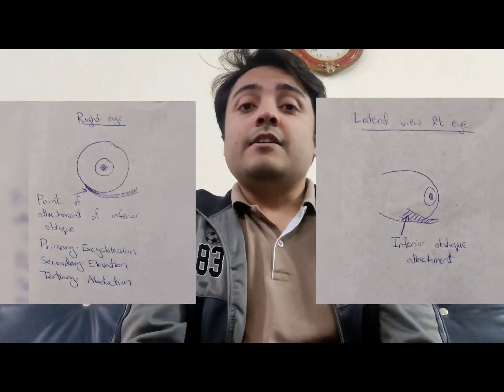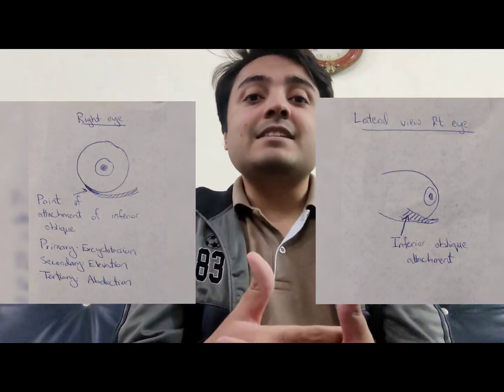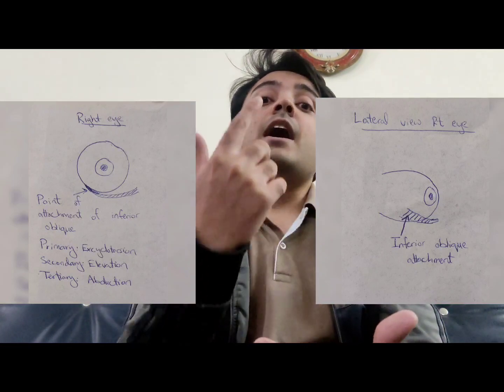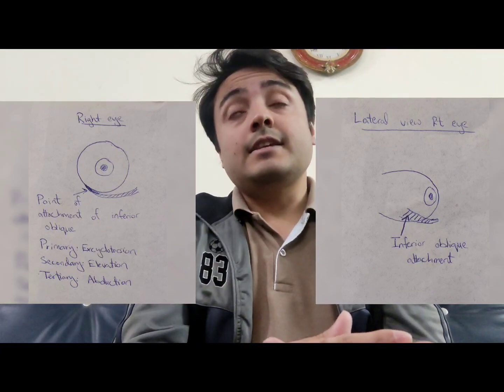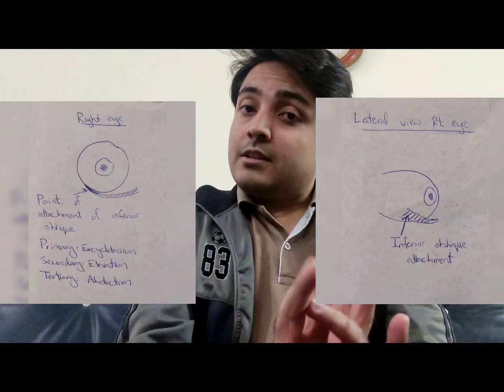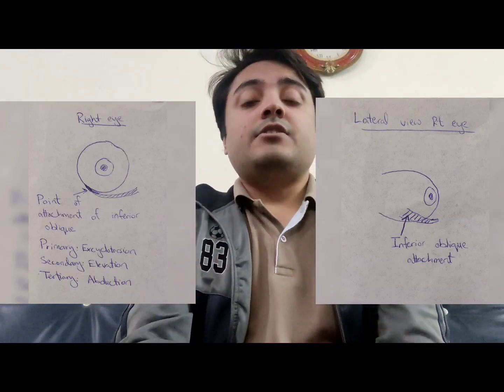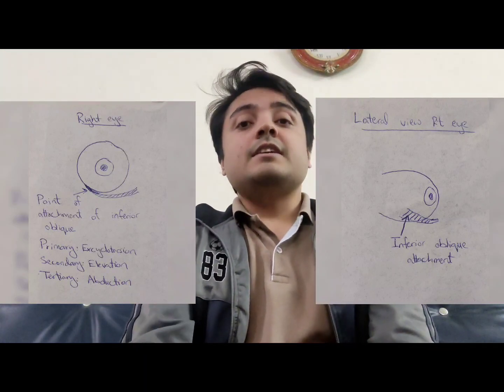Now let's come to the inferior oblique. Keeping in mind the diagram of the inferior oblique — if this muscle contracts, it causes excyclotorsion, that is the outward rotational movement of the eye. This is the primary function. The secondary function is elevation. The tertiary function is abduction. The tertiary functions of both obliques is abduction.